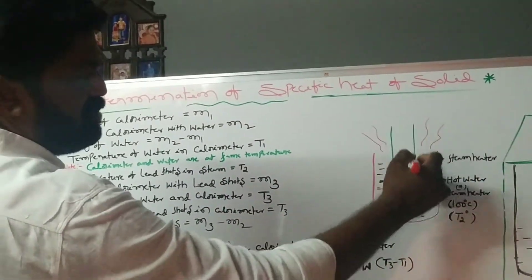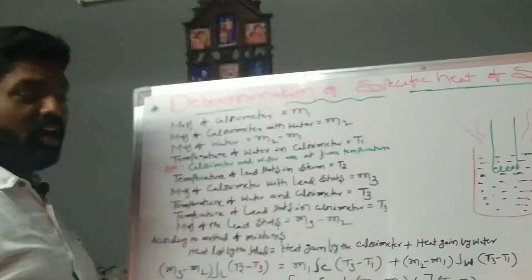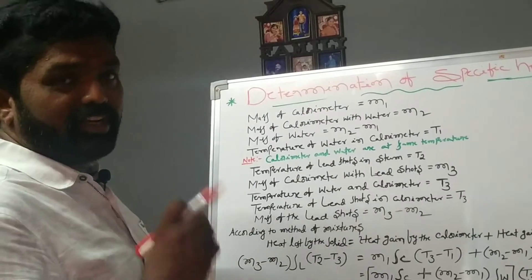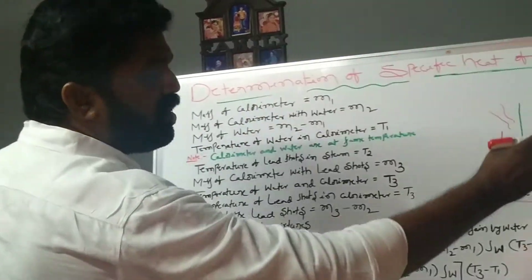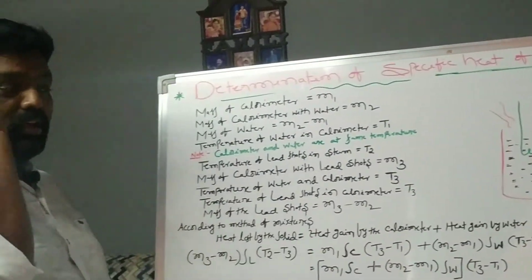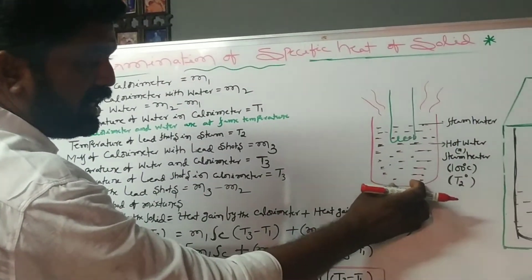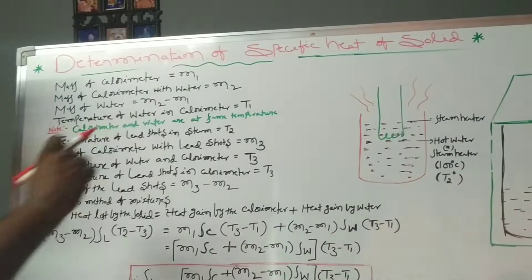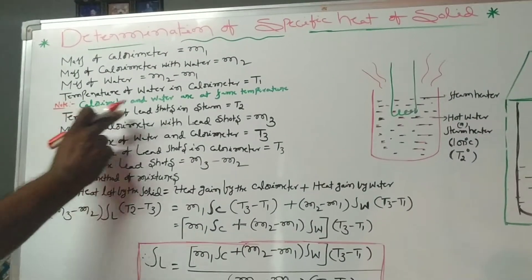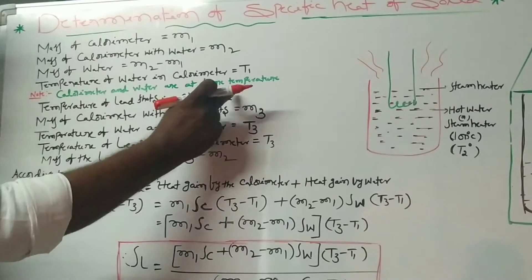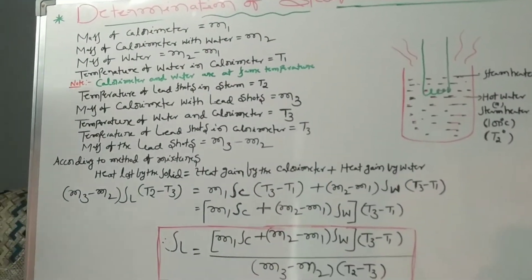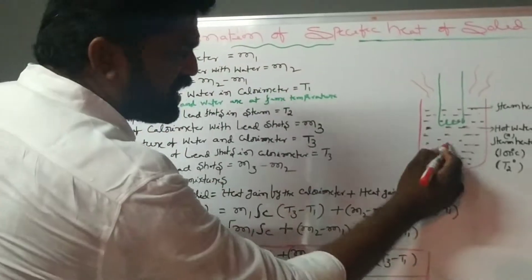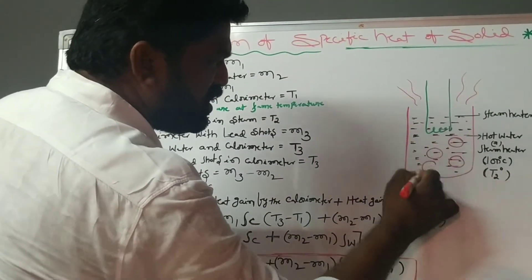Using the steam heater, boil water up to 100 degrees centigrade. Now take some lead shots and drop them into the boiling steam. The lead shots are in steam, and their temperature is T2 degrees centigrade.